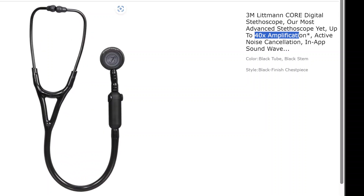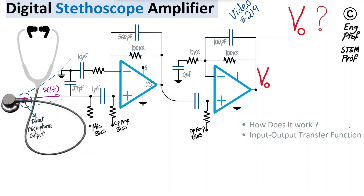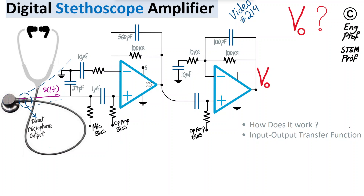Let's go back to our analysis. We have signal x(t) coming in and we want to analyze what happens. I'm not going to focus on the bias side, but bear in mind there is a connection for the DC bias of the microphone, and also a DC connection for the proper biasing of the input of the operational amplifier.